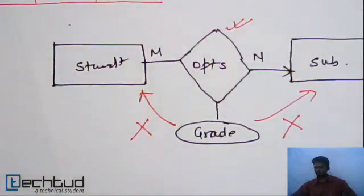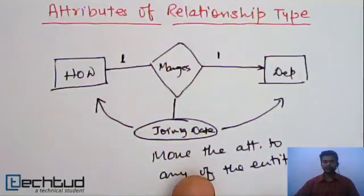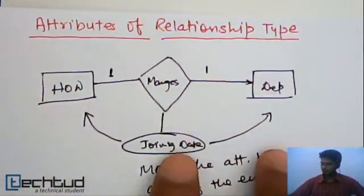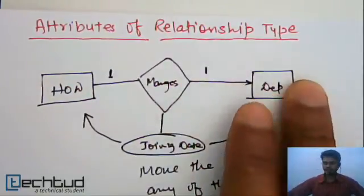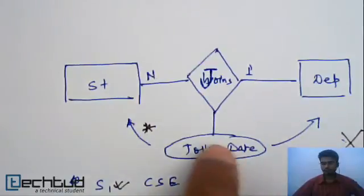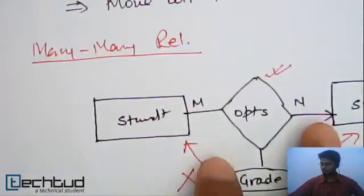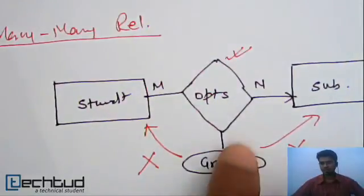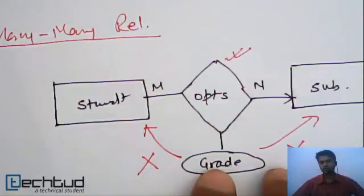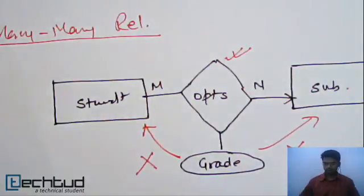So in this lecture what did we study? We studied about the attributes of a relationship type. It can be of three kinds. The first is one-to-one relationship, where we can move the attribute of the relationship type to any side. In the second case, N-to-one or many-to-one relationship, we can move the attribute to the many side — the N side. And the last one is many-to-many relationship, where we cannot move the attribute to any side, so we have to keep a separate table for this. See you in the next lecture. Thanks for watching.